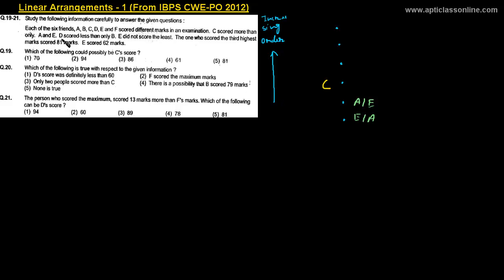D scored less than only B — there is only one candidate above D, which means B scored the highest and D is just below B. So B is at position 6 and D is at position 5. The positions of B, D, and C are now fixed.